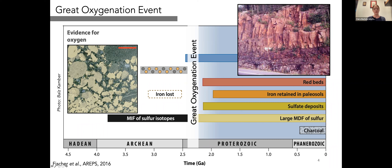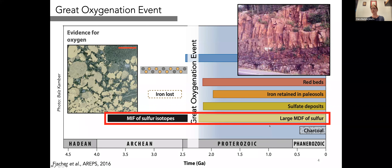Perhaps one of the most major discoveries around the Great Oxygenation Event was the observation of mass-independent fractionation of sulfur isotopes (MIF-S) prior to 2.3 billion years ago, and the total absence of large-scale mass-independent fractionation after that. This is going to be the focus of the talk today, so I'll give a quick overview on sulfur isotopes and the notations I'm going to be using.